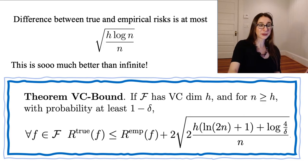So it's saying, the difference between true and empirical risks is at most, which is kind of like square root of VC dimension divided by the number of data points. The log n is less important.